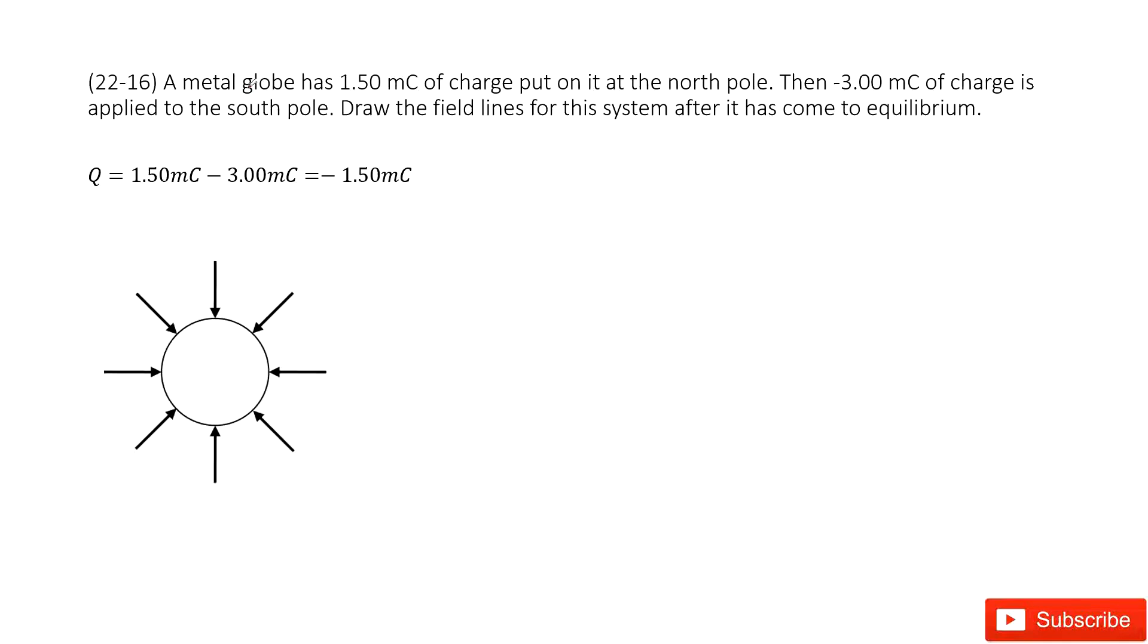In this case we have a metal globe. In the north pole, one side has 1.5 millicoulombs. And in the south pole, it is negative 3 millicoulombs. Draw the field lines of this system after it comes to equilibrium.